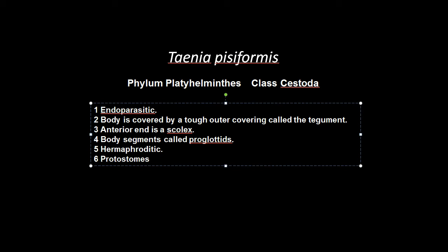It has body segments called proglottids. They are hermaphroditic, meaning that they have both male and female sex organs, and they are protostomes, meaning that during the embryonic stage, the first opening — the blastopore — becomes the mouth.